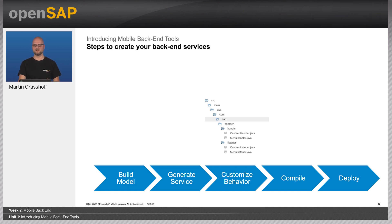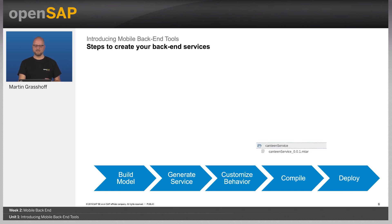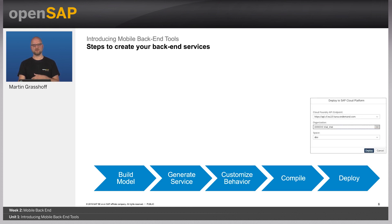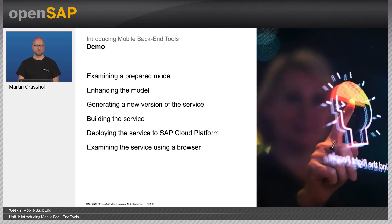Other features like filter, select, and other OData features are supported already — the service is ready to go. With a Java project, you compile it. Once compiled, you get either a WAR file or an MTAR — multi-target archive — that you can directly deploy to run and host the service. We can deploy it to Cloud Foundry as a standard Java application. In the demo now, I will show you how this works.